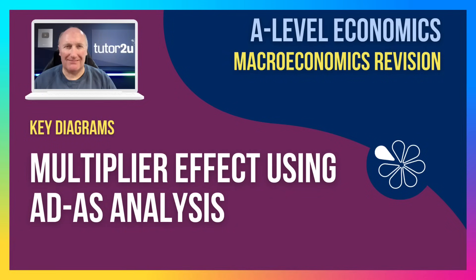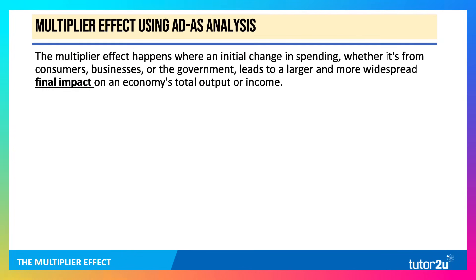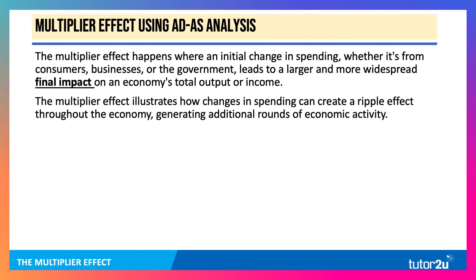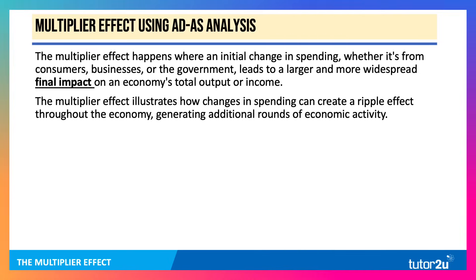Hi there. Let's think about using ADAS analysis just to help illustrate the multiplier effect. The multiplier effect happens when an initial change in one or more components of aggregate demand — it could be from consumers, businesses, or the government — leads to a larger, final, more widespread, bigger impact on the economy's GDP or national income. The multiplier effect illustrates how changes in spending can create a ripple effect throughout the economy, generating additional rounds of economic activity.